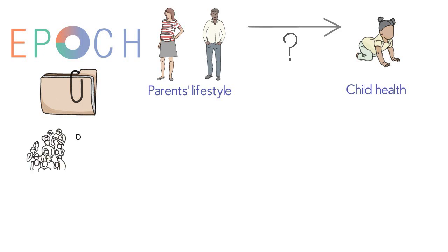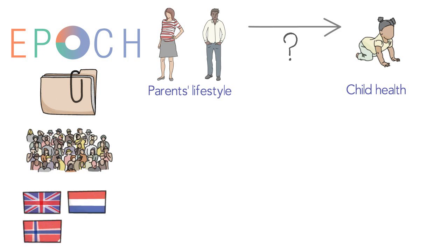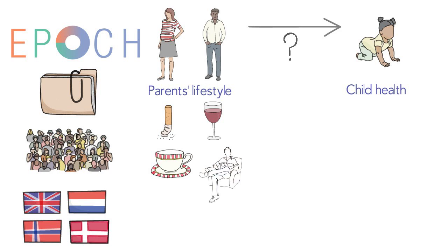We're combining existing data on hundreds of thousands of people from several large European studies. And using this information, we're studying whether parents' smoking, drinking alcohol, drinking caffeine, keeping physically active, and eating high-fat and high-sugar diets are causally related to lots of different measures of health and development in children.